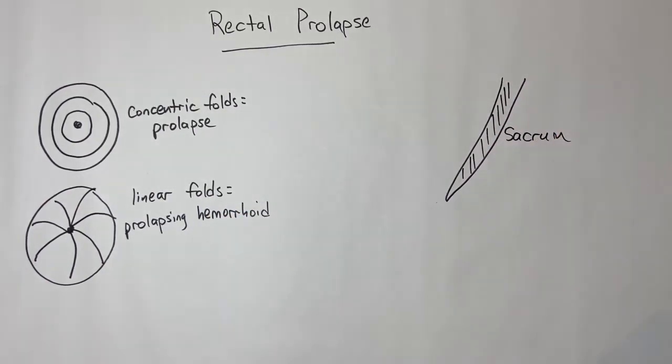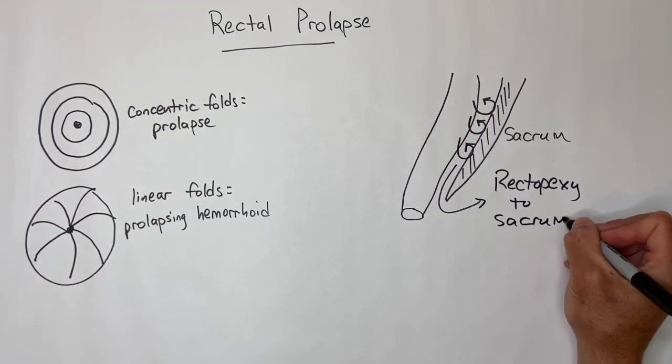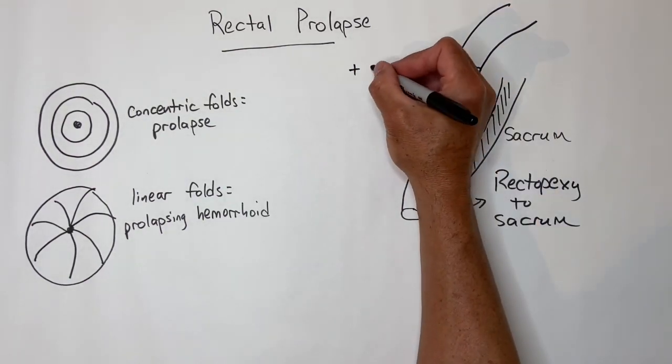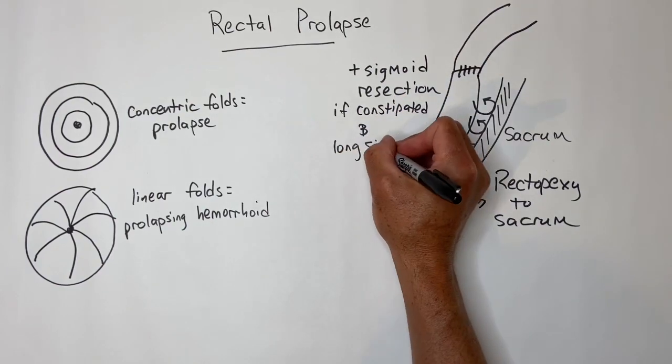Rectal prolapse is treated in a good surgical candidate by transabdominal rectopexy and possible sigmoid resection if there is an element of chronic constipation or an elongated sigmoid. That can be a point of argument though.